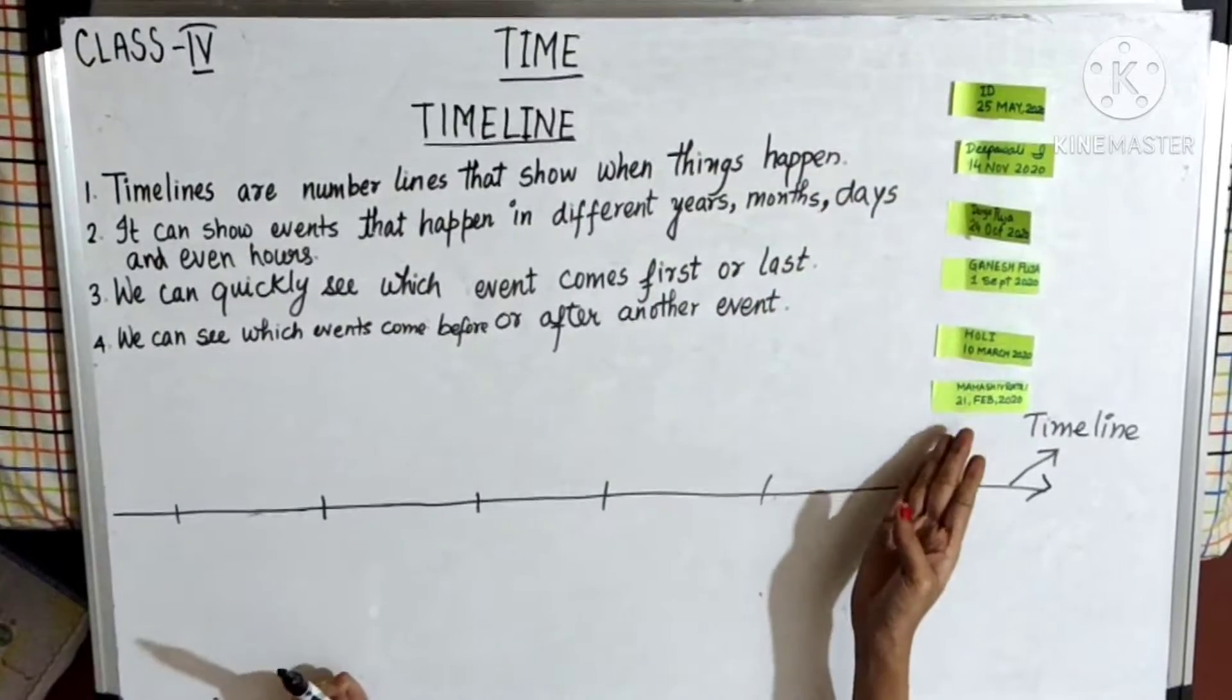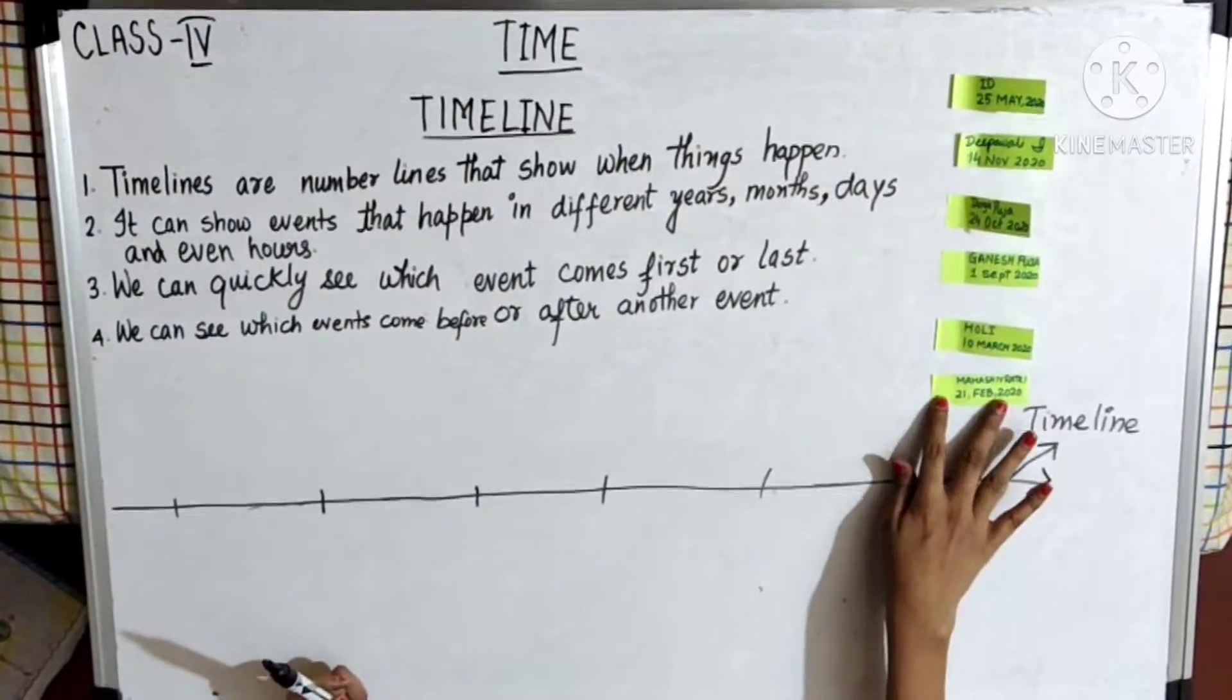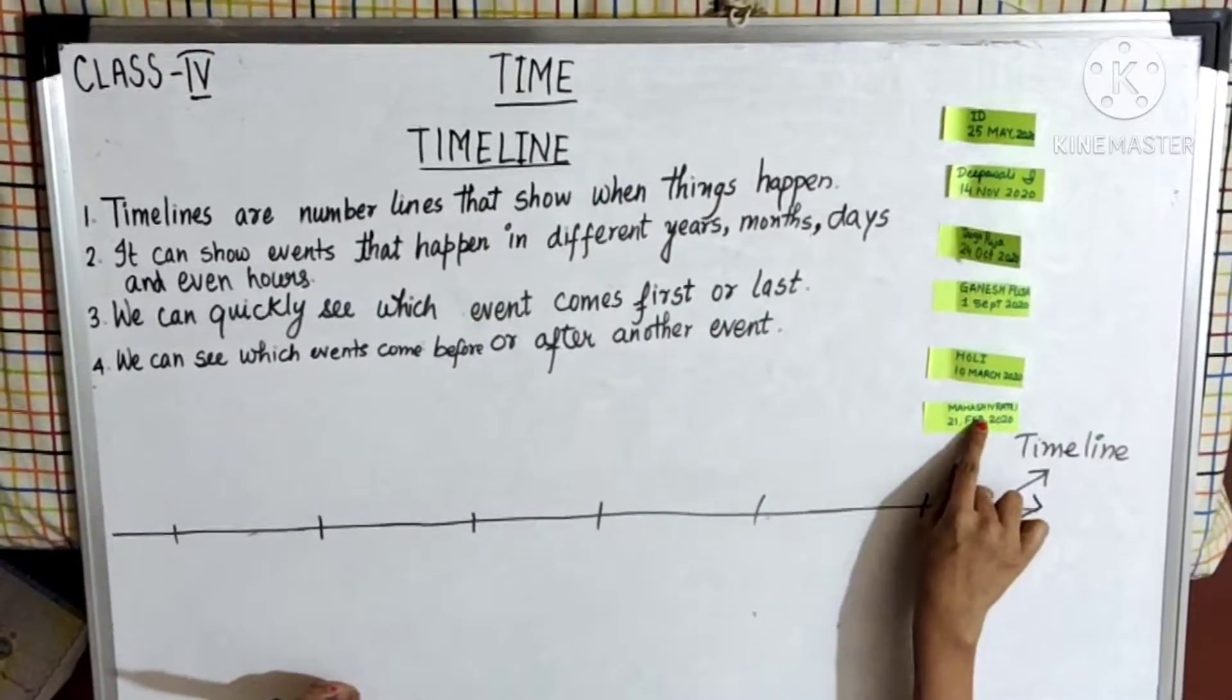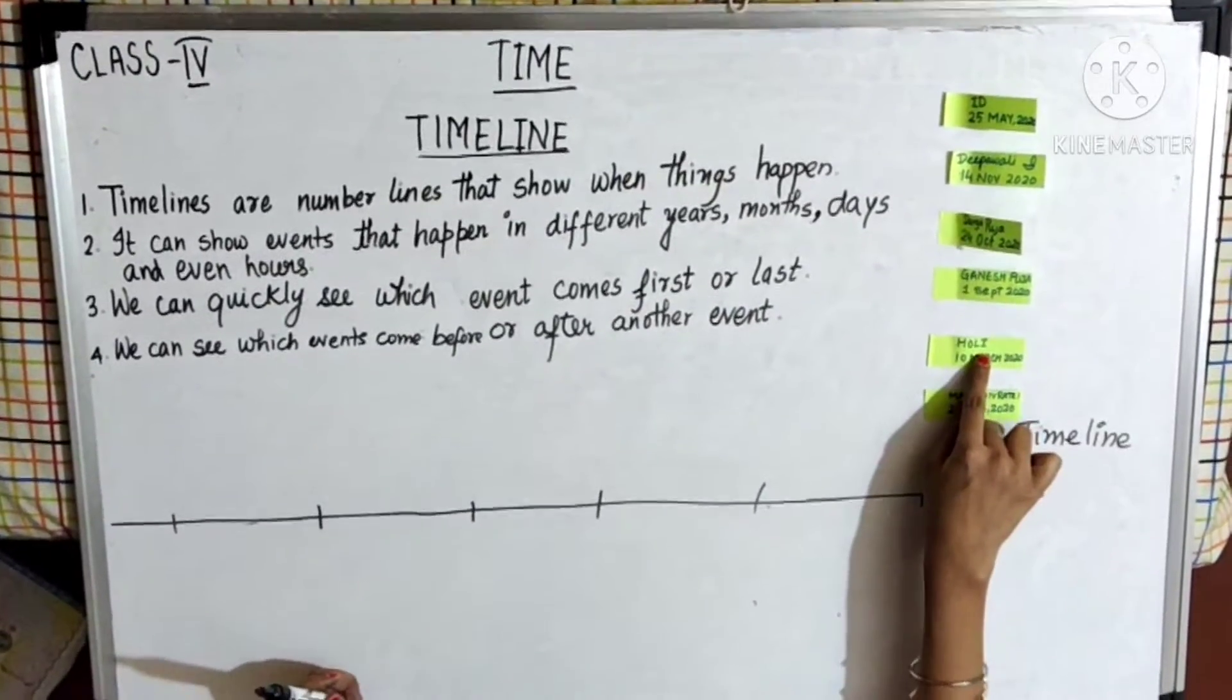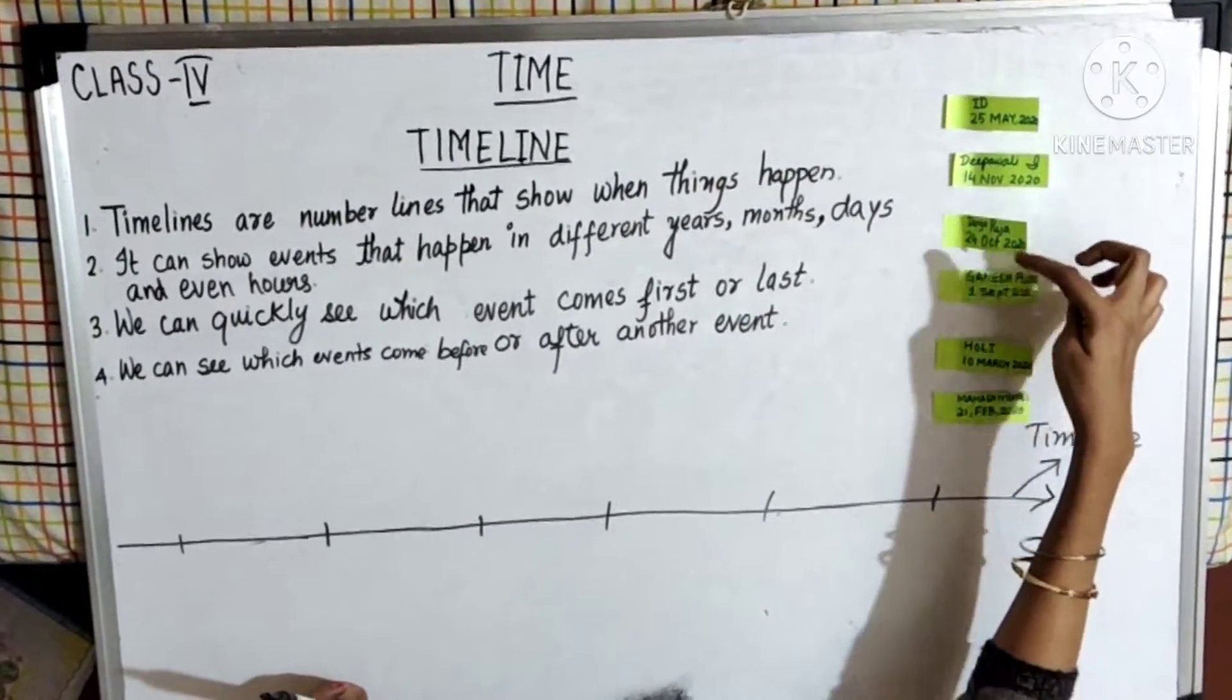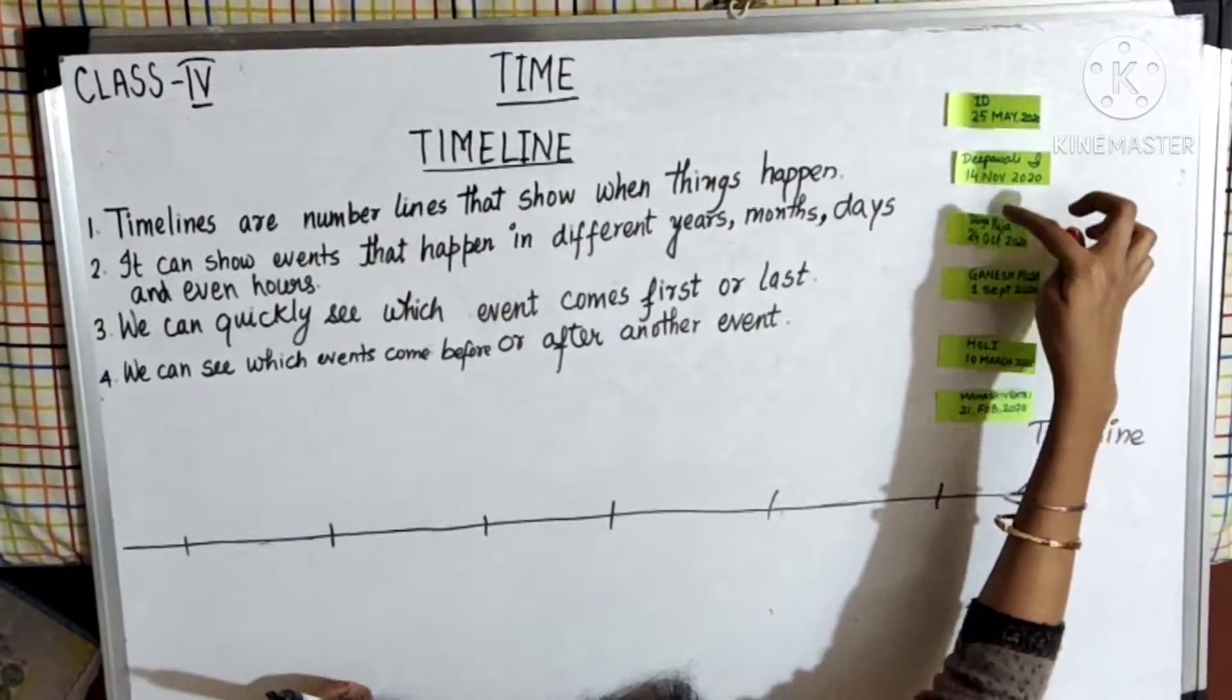As you can see, I have different festivals on this piece of paper. First is Mahashivratri in February, then March, then May, then September, October, and then November.